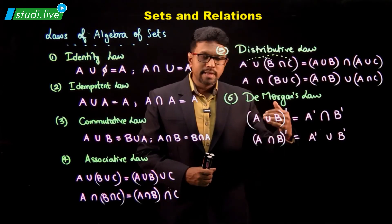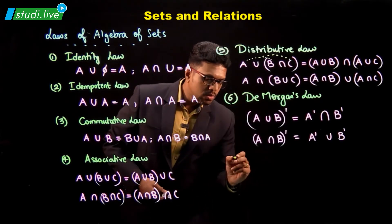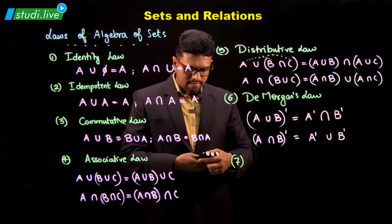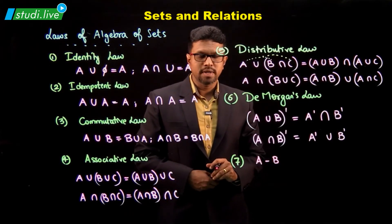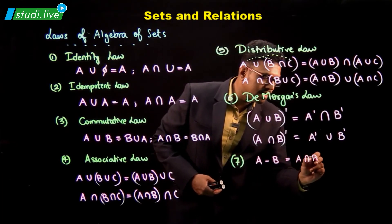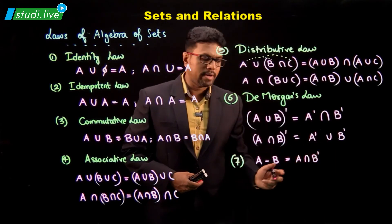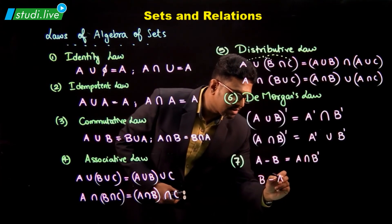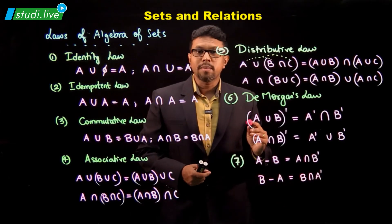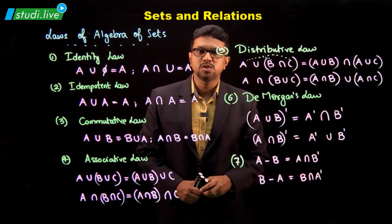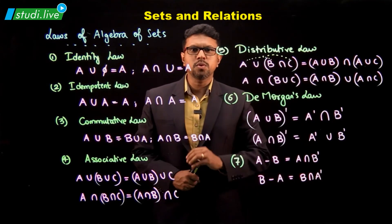These are some of the laws that we have studied. These named laws have some particular names; there are some more laws but they do not have names. So in the next law, A minus B can be written as A intersection B complement. Similarly, B minus A can be written as B intersection A complement. These are some of the laws of algebra of sets.